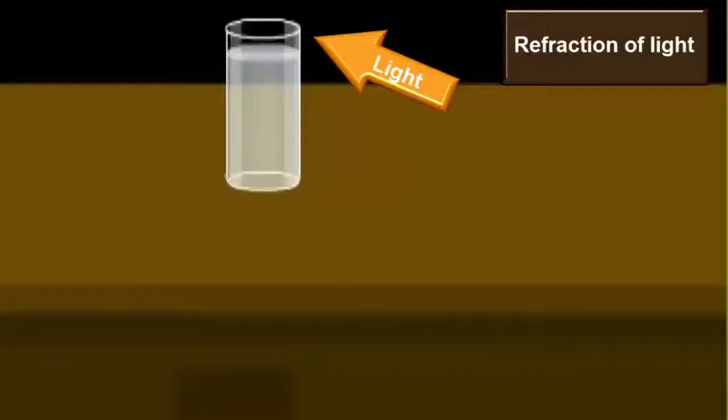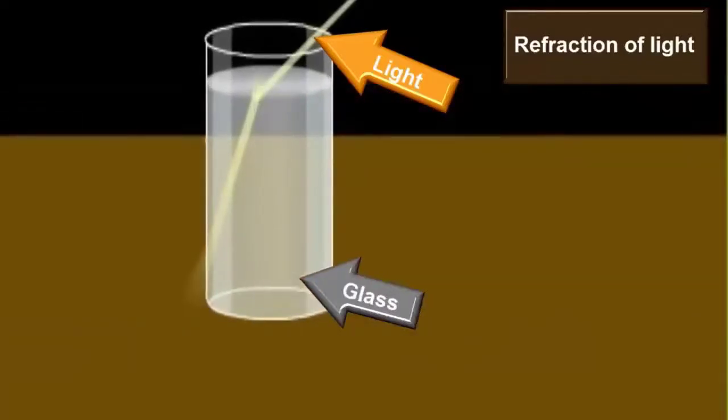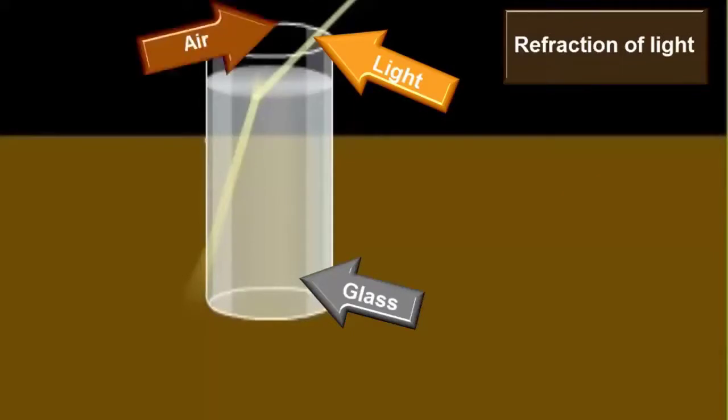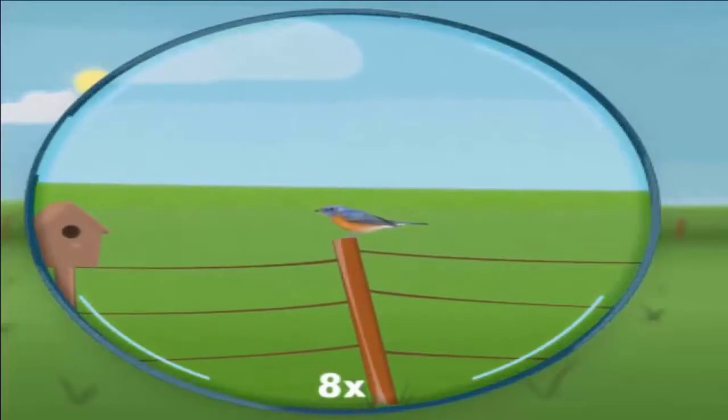Lenses: When light enters from a rare medium (air) to a denser medium (glass), it bends toward the normal. Rather than this, when it moves from denser to rare medium, it bends away from the normal.